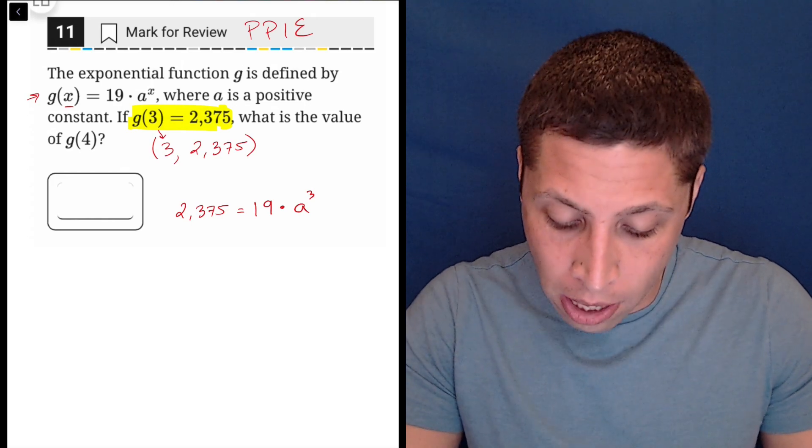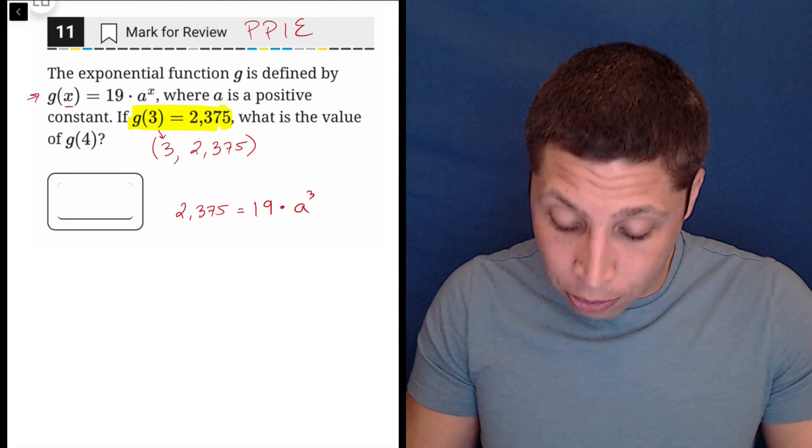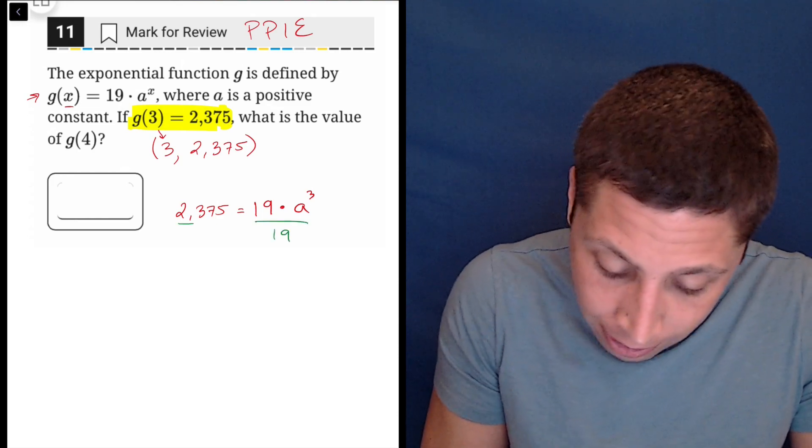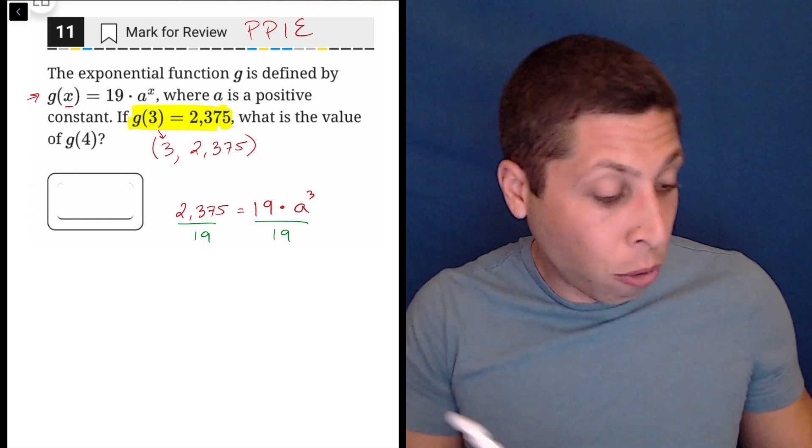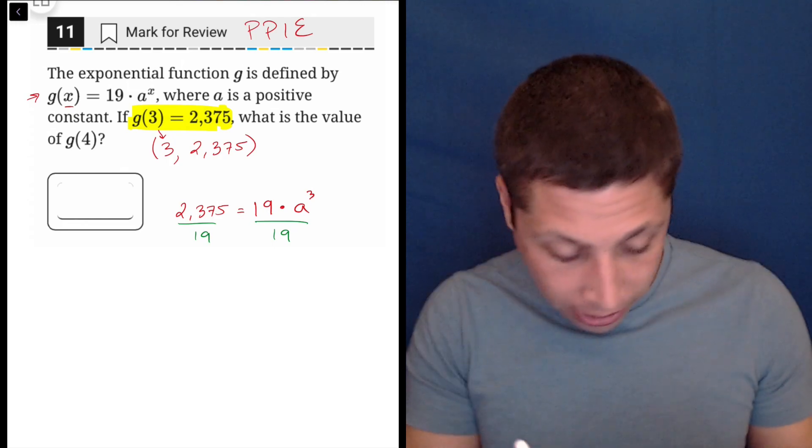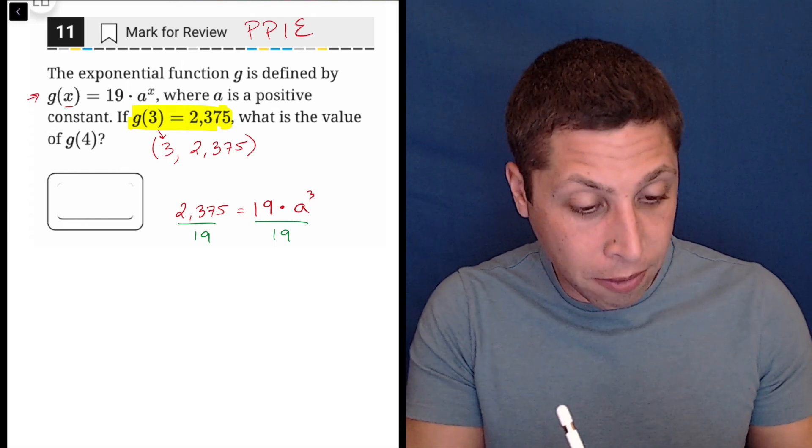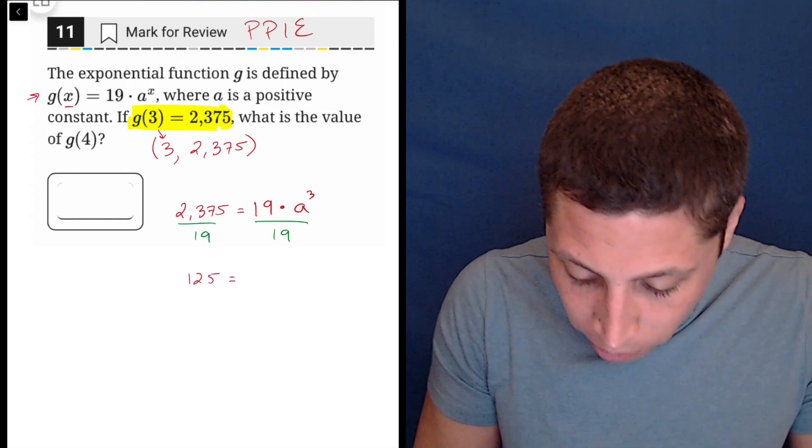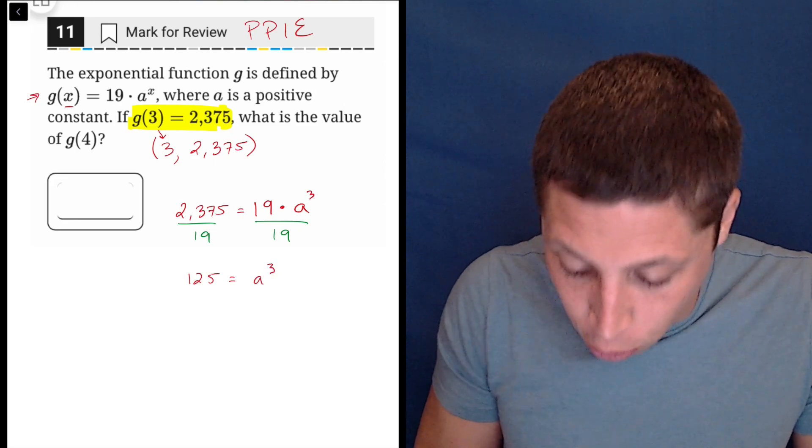We do need to do a little algebra here. So the way to solve for a, which we should do just because we can, is to divide by 19. So let's just get the normal scientific calculator. 2375 divided by 19 is 125. So 125 is equal to a cubed.